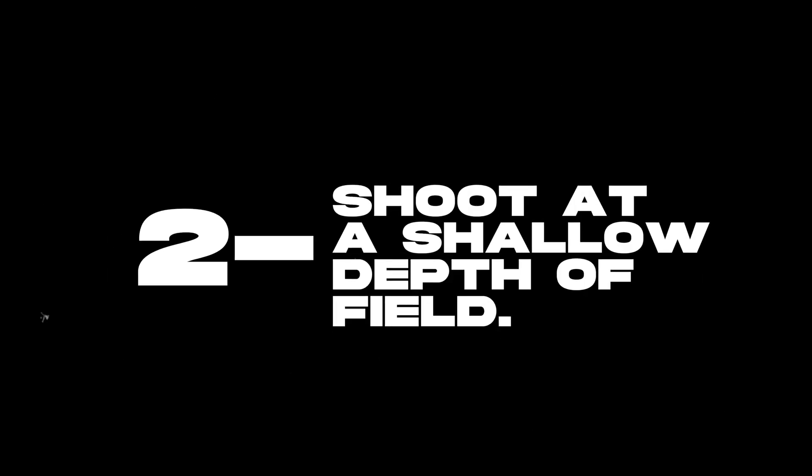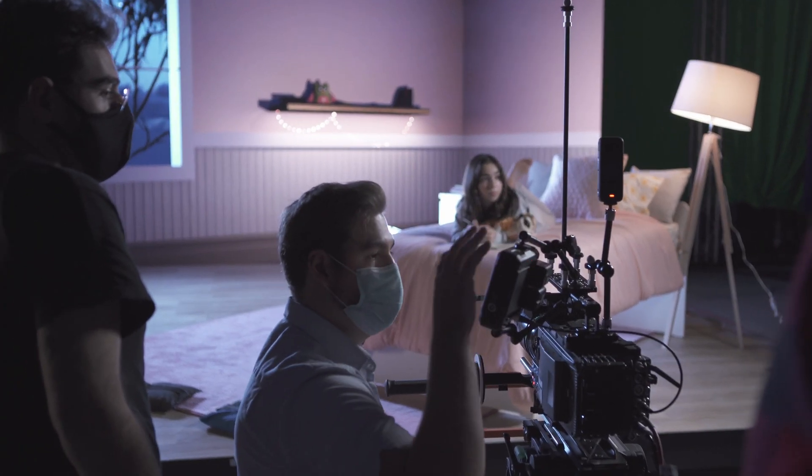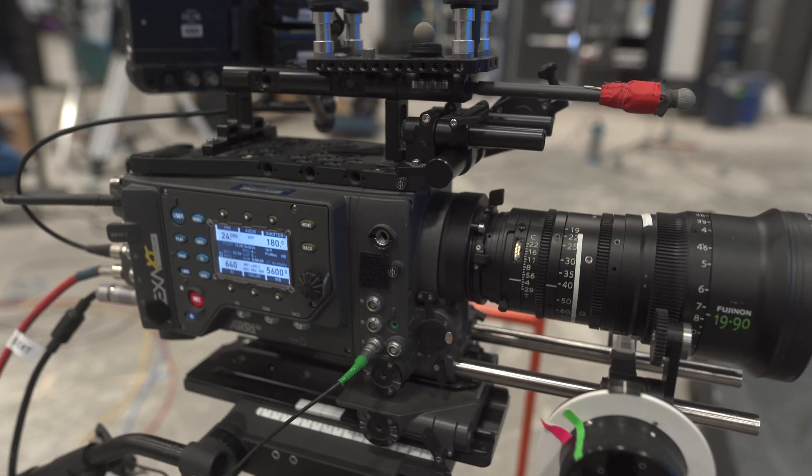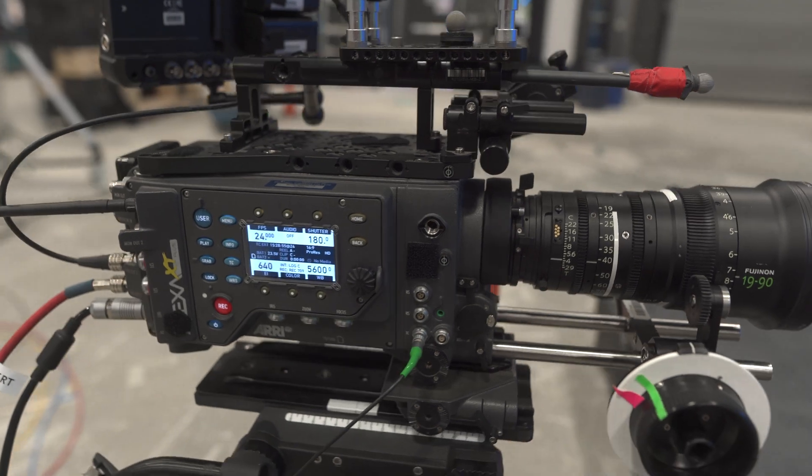Which leads to point two: shoot at a shallow depth of field. The more depth you have in your shot, the less the Moiré will translate to your camera's sensor. And finally, number three: take a step back. If you're catching that Moiré, bring the camera back a little bit, reposition your shot, and if it's still there, just take another step back. These are the quick tips you need when you can't recalibrate the screen.